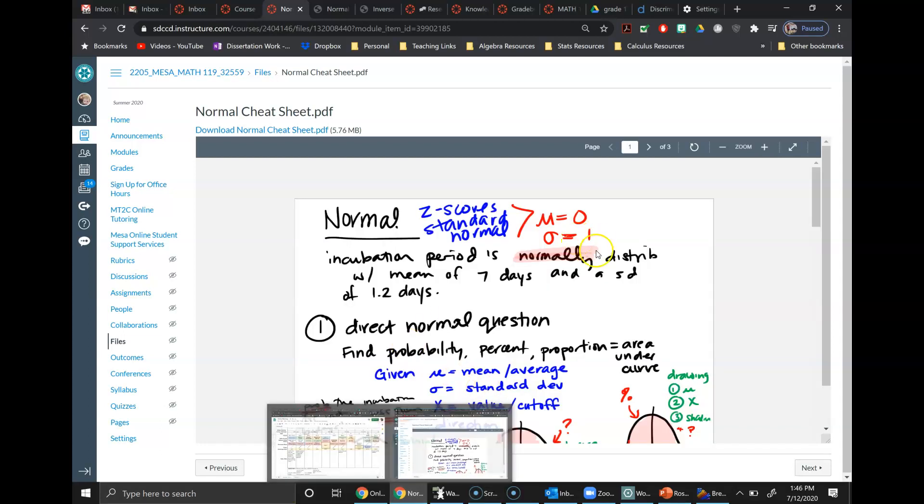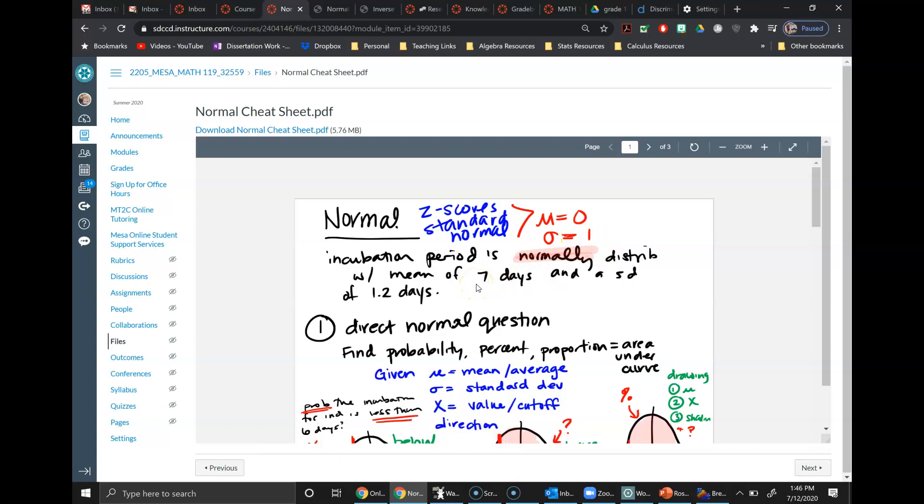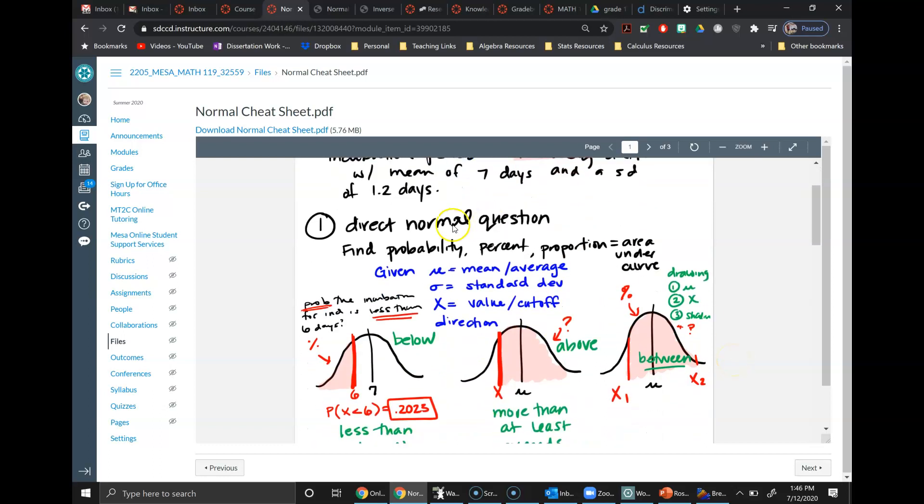So the normal cheat sheet breaks down the three different types of normal problems. You have direct normal problems where you're going to be asked to find a probability, percent, proportion. These are all keywords to say area under the curve, and you will have to be given the mean, the standard deviation, a value that we want to use as a cutoff, and then the direction that we would be shading our curve in.